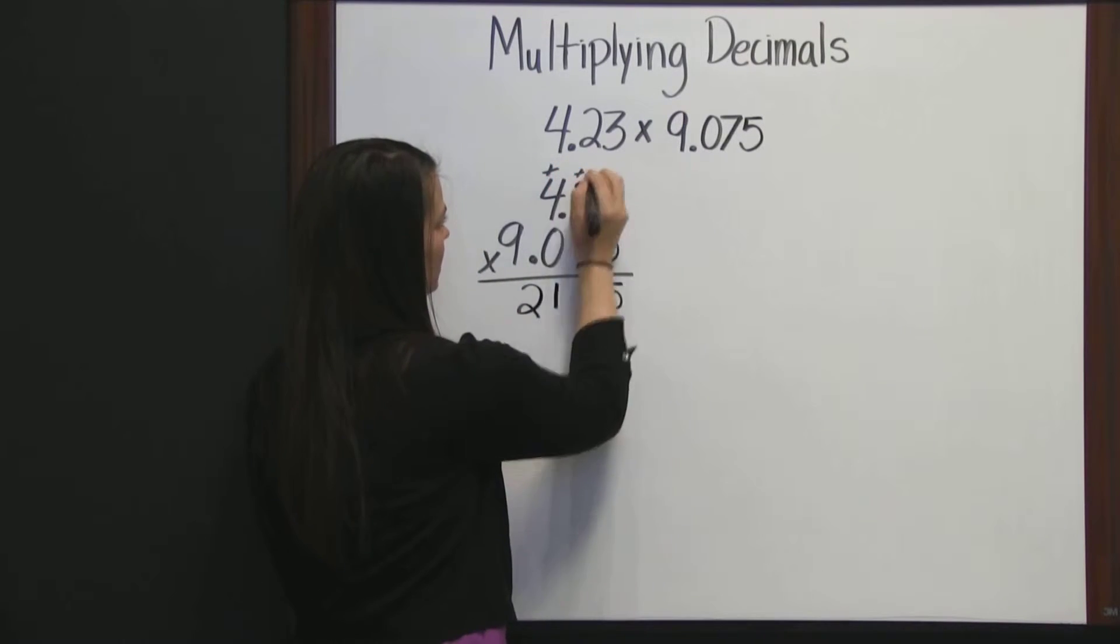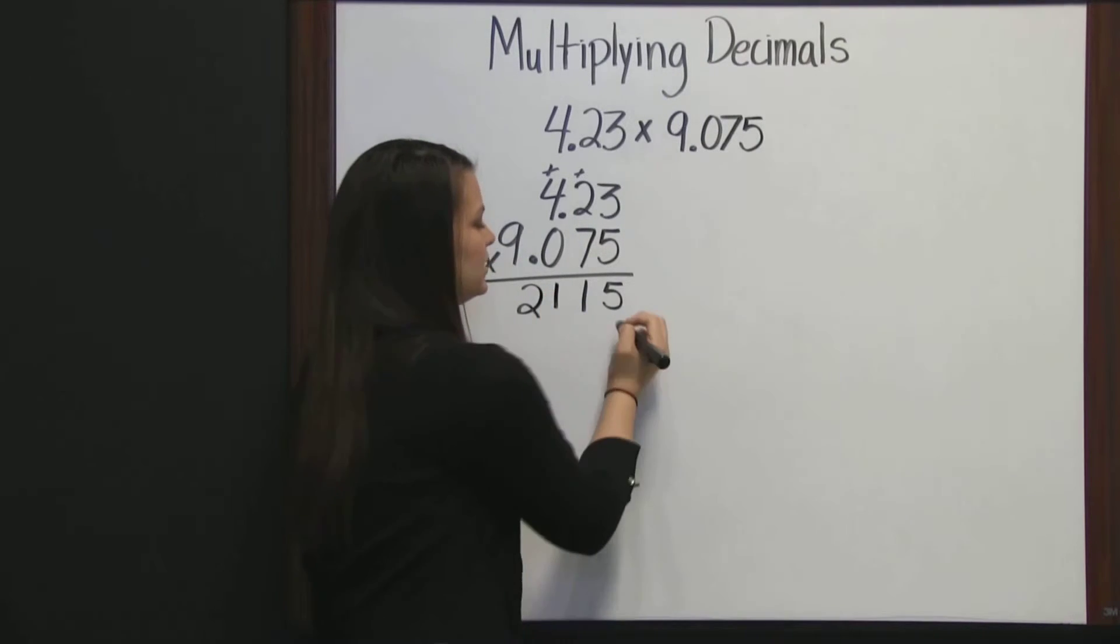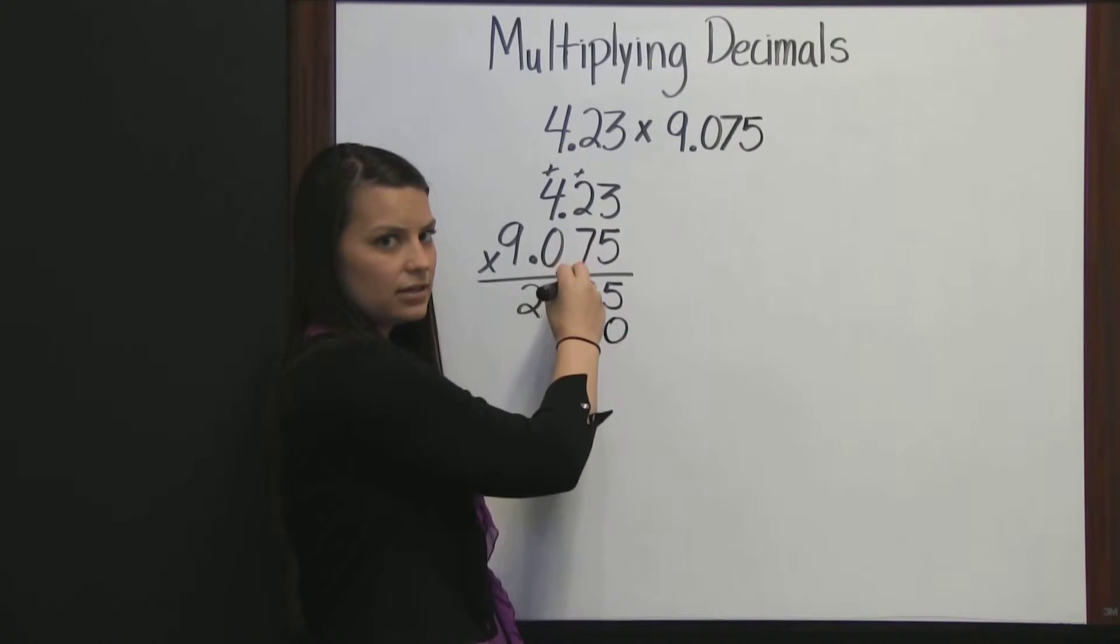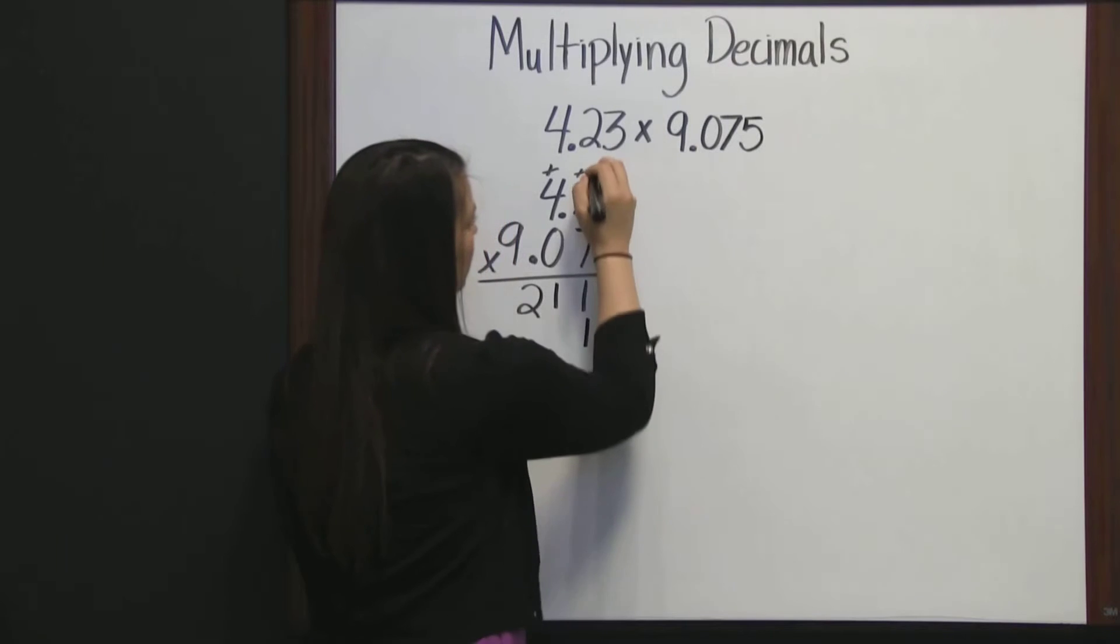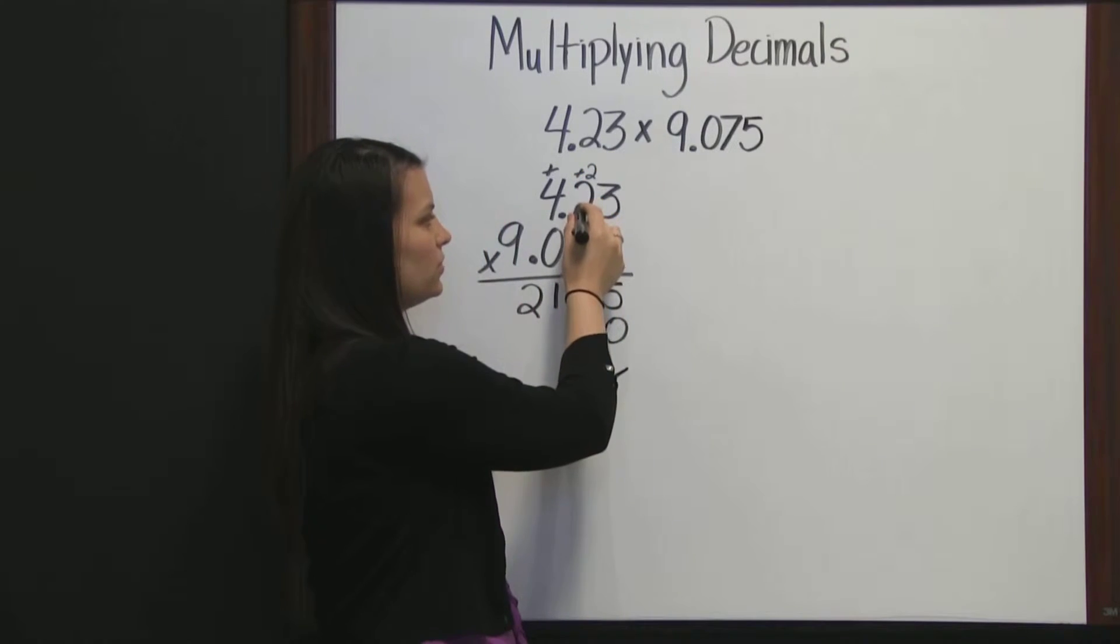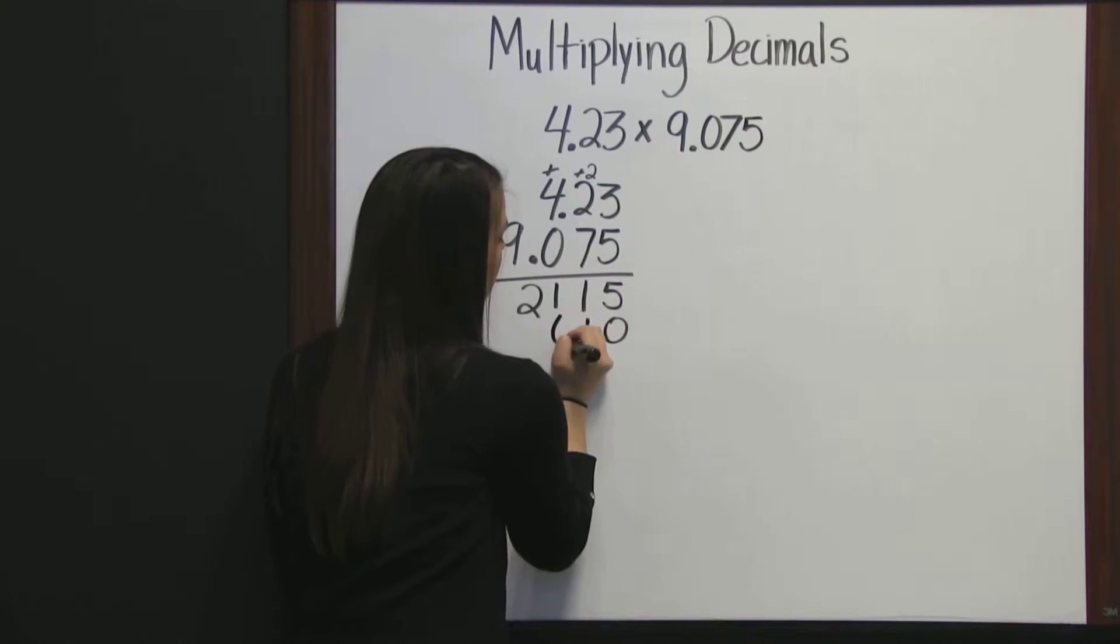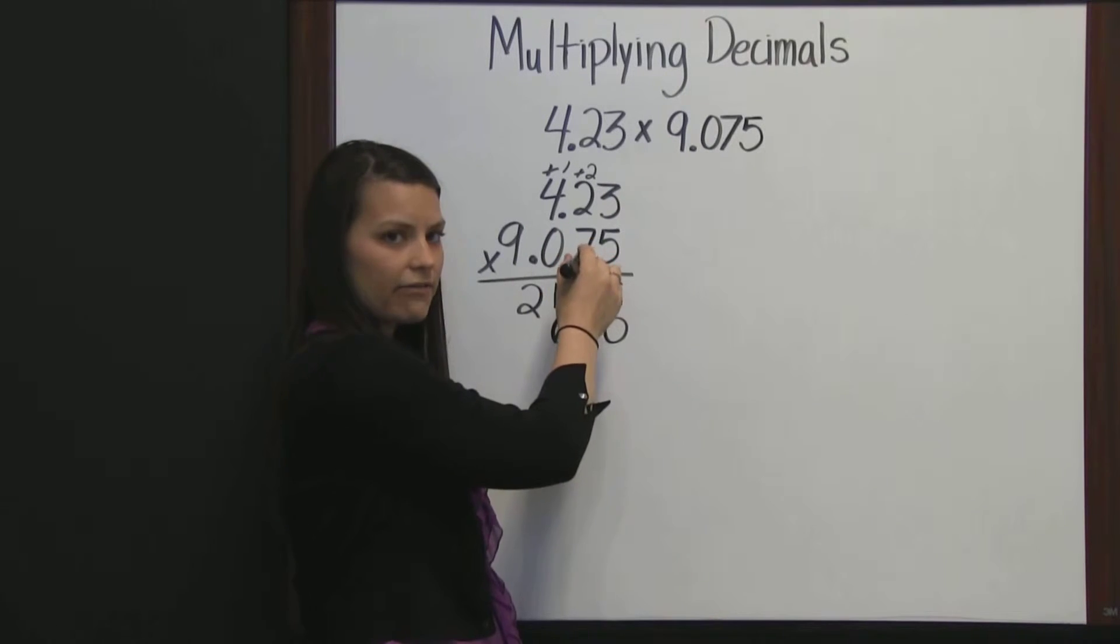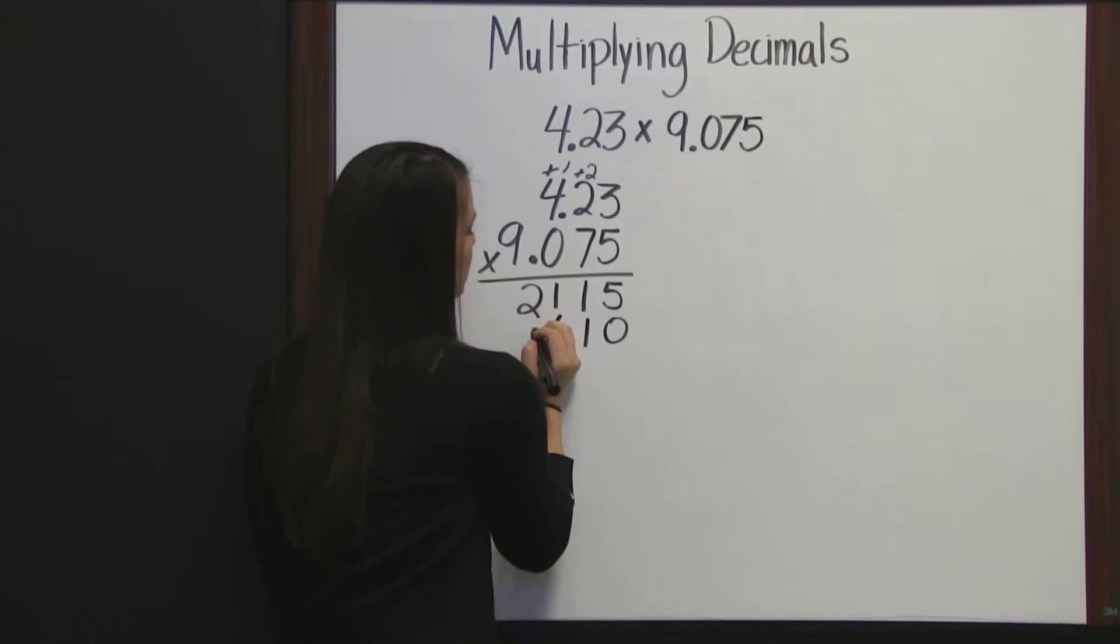I'll get rid of these for our next number. Now that we're multiplying times the 7, we need a 0 placeholder. 7 times 3 is 21, write your 1, carry your 2. 7 times 2 is 14, plus 2 is 16, write your 6, carry your 1. 7 times 4 is 28, plus 1 is 29.